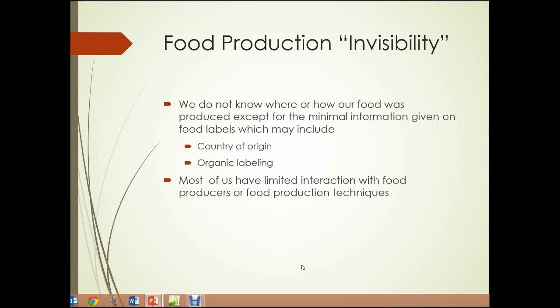Also, food production away from the areas where food is consumed results in food production invisibility. We don't know where or how our food was produced, except for the minimal information given on food labels, which may include the country of origin and organic labeling. If a particular food product is not labeled as organic, then we have no idea what system was used to produce it. And most of us have limited interaction with food producers or food production techniques.